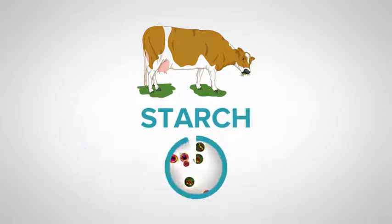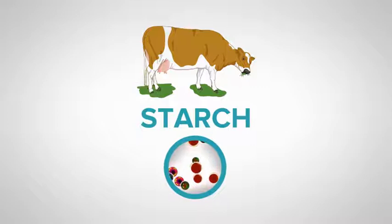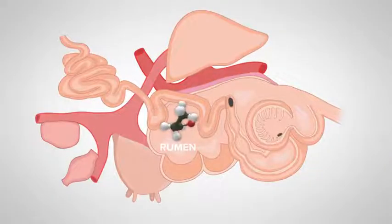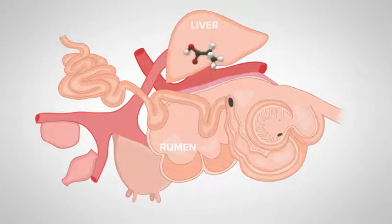The microbes that digest starch are different from the ones that digest the structural carbohydrates. They primarily produce propionate as their waste product. The propionate that's produced in the rumen makes its way to the liver, where most of it is converted to glucose.